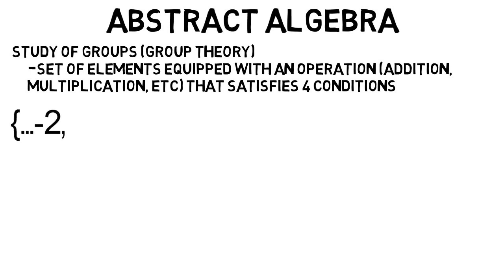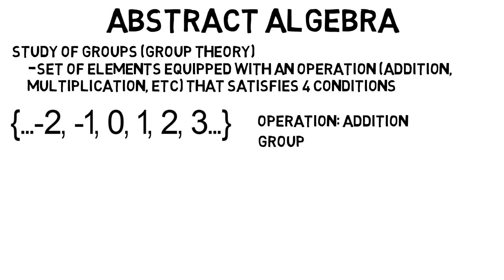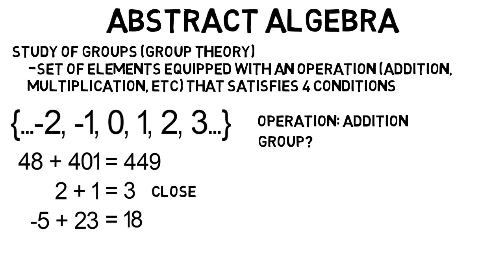So let's take the set of integers, from negative infinity to infinity. And we're going to use addition as our operation. Now we want to know, is the set of integers a group with addition as the operation? First off, if we add any two integers, any two numbers in our set, do we get another number in our set? And the answer is yes. Add any two integers, and you get another integer. This means the set is closed under addition. And this is one condition that a group must satisfy.